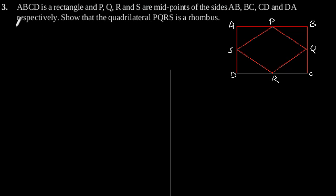Exercise 8.2 Question number 3. ABCD is a rectangle and P, Q, R, and S are the midpoints of side AB, BC,